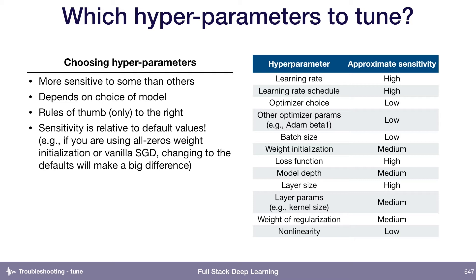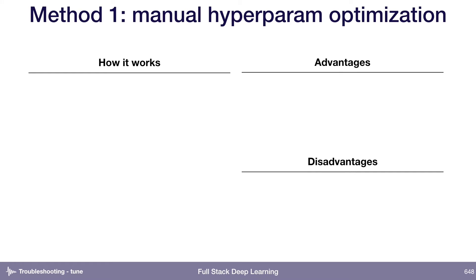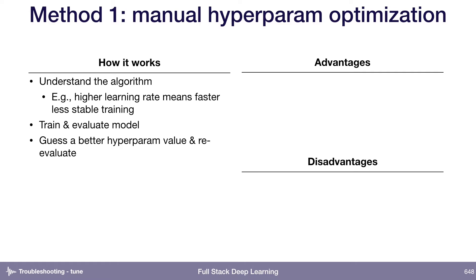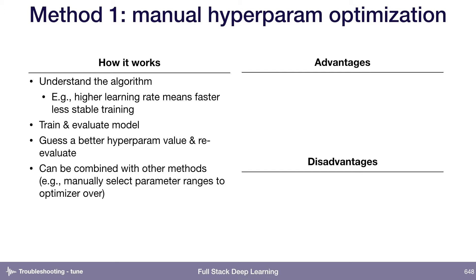We've chosen some hyperparameters to tune — now how do we actually go about doing that? The first method, and the one most people start with, is manual hyperparameter optimization. You build a really good understanding of the algorithm itself. For example, if you increase the learning rate, training is going to be faster but less stable. Then you train and evaluate a model or a few models, and you guess what a better hyperparameter value would be based on your learning curve.